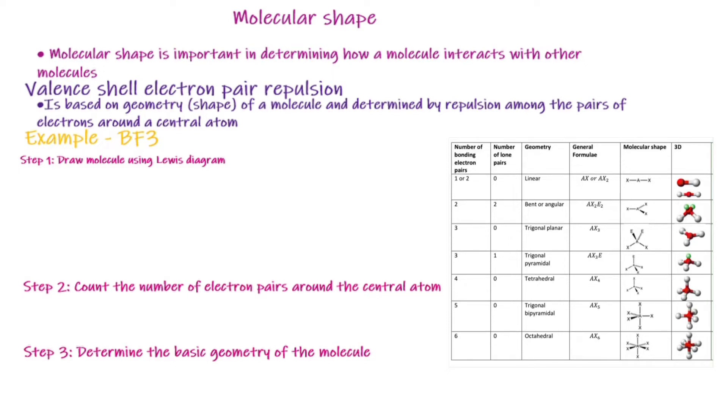We are going to make use of the valence shell electron pair repulsion theory. The theory states that the valence electron pairs in a molecule will arrange themselves around the central atom so that the repulsion between their negative charges is as small as possible. It is based on the idea that the geometry or shape of the molecule is mostly determined by the repulsion among the pairs of electrons around the central atom.